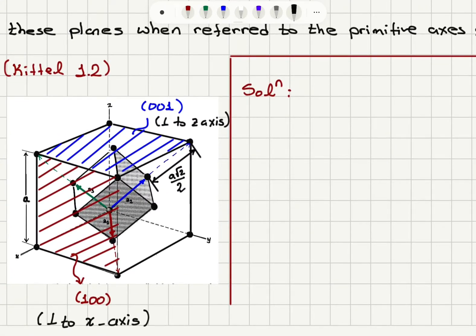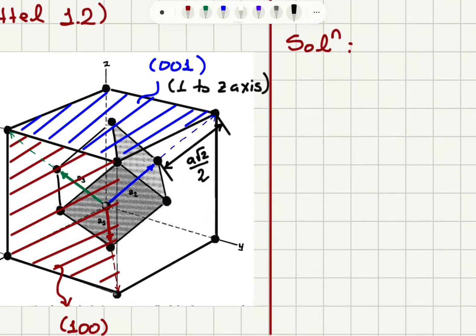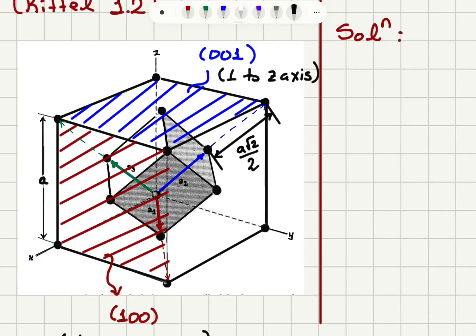You can see that we have three primitive translation vectors a1, a2, and a3 that point from the corner atom to the atoms at the three face-centers as you can see here. The distance between the corner atom and the face-center would be a times square root of 2 over 2, given that the lattice constant is a.